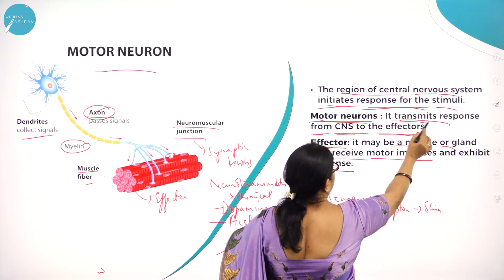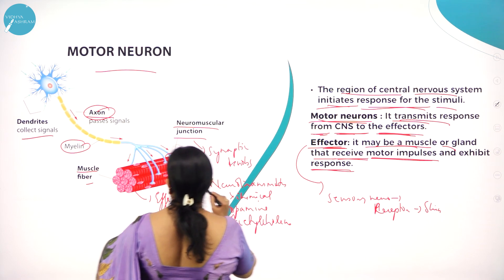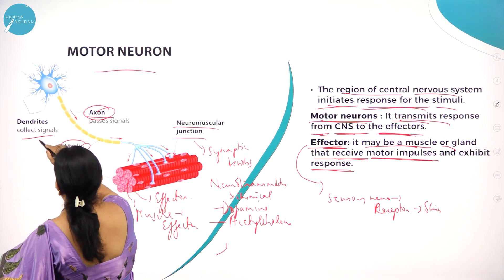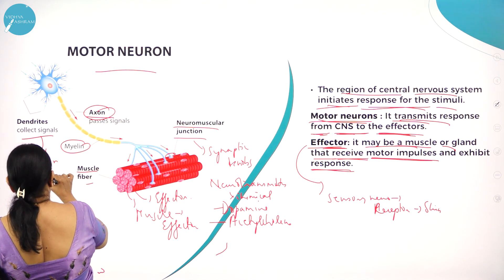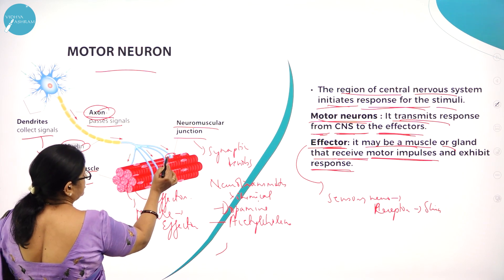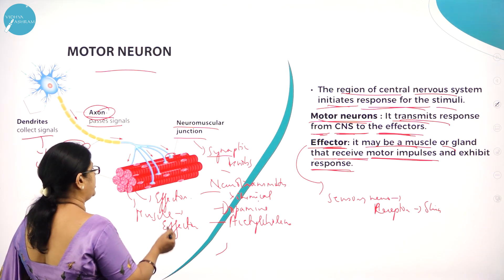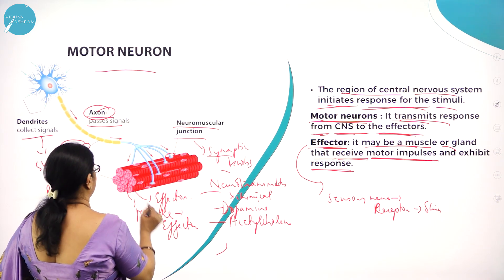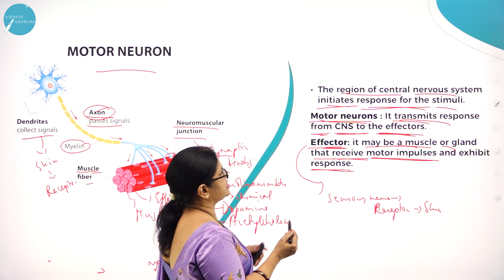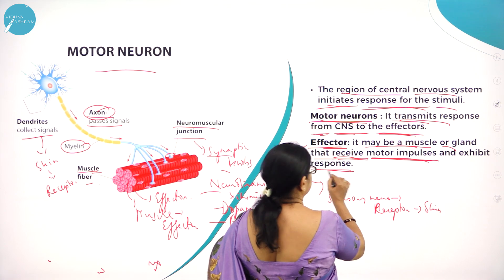The motor neuron transmits response from the CNS to the effector. The effector may be a muscle or a gland that receives motor impulses and exhibits response. The dendrites collect signals from the skin, which is the receptor. From there the dendrites pass on the signals to the axon, then to the telodendria which has synaptic knobs — the neuromuscular junction — which has neurotransmitters like dopamine or acetylcholine, and they pass on the impulse to the effector, which may be a muscle fiber.